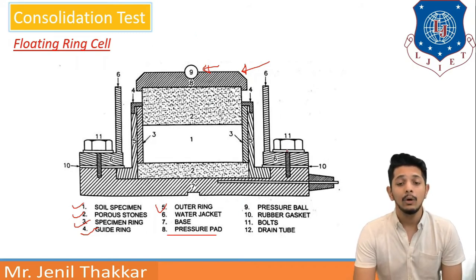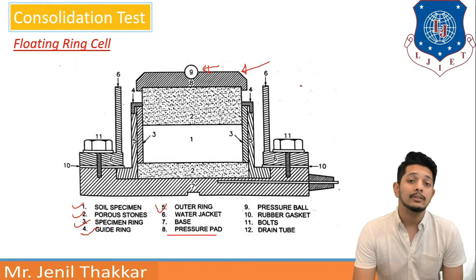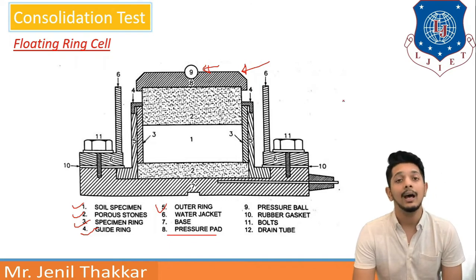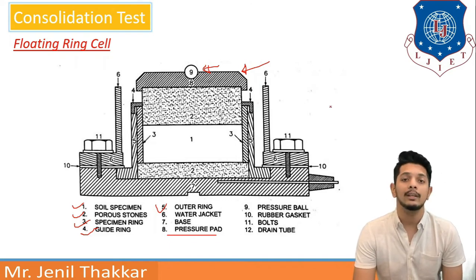Furthermore, rubber gaskets, bolts and drainage tubes are also provided in floating ring cells. But it is floating ring cell due to these rings are floating. Floatable rings are there that is why it is floating ring cell.